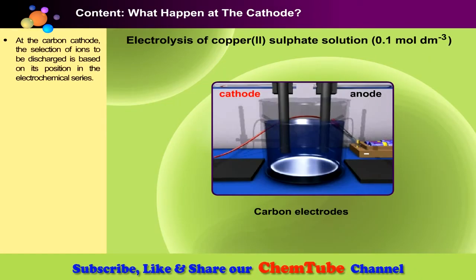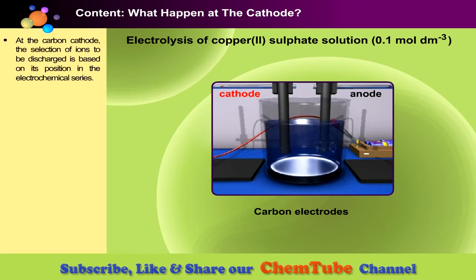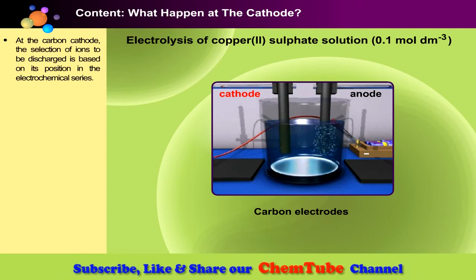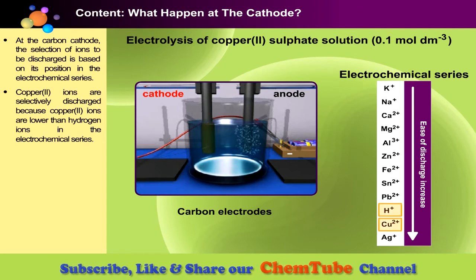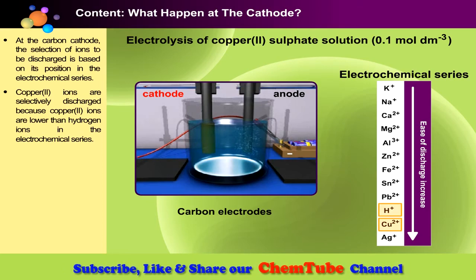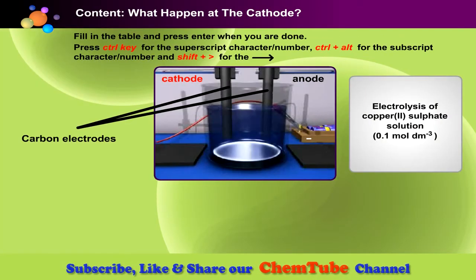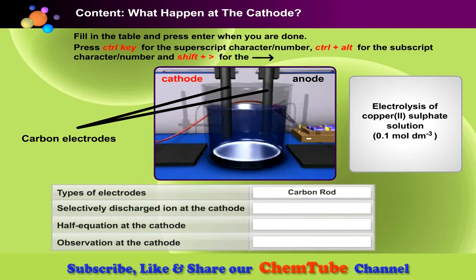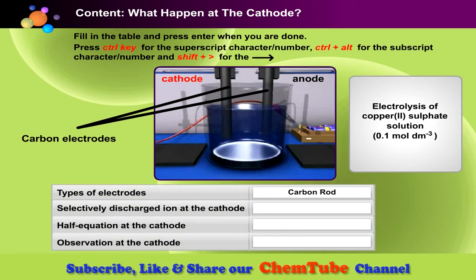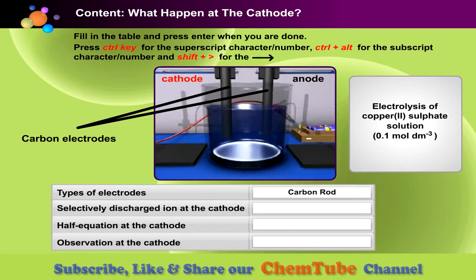In this setup where carbon rod is used as the cathode, the selection of ions to be discharged is based on their position in the electrochemical series. Therefore, copper ions are selectively discharged because copper ions are lower than hydrogen ions in the electrochemical series. Do you still remember what happened to copper ions at the cathode? Can you write the half equation at the cathode? What will you observe at the cathode? Fill in the table and press enter when you are done.